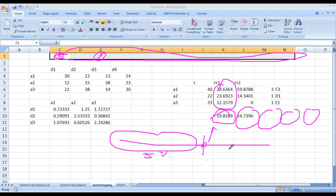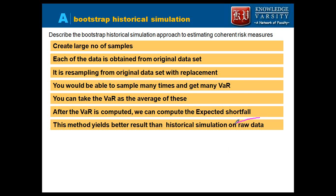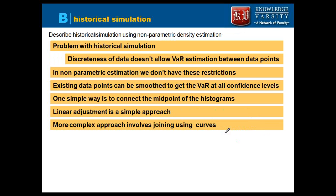Is this process clear? Does it make sense? This gives you much better value than only the raw data because you are doing some simulation. You are not saying okay this is exactly what I am getting - with all the values you are taking, randomly you are selecting some of the values. In reality yes you may get some values randomly. Now what we have is another method - historical simulation using the non-parametric density estimation.